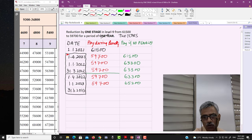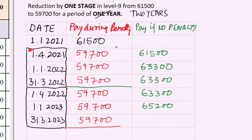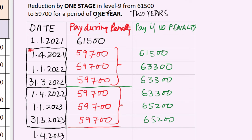On 31st March 2023, he continues to get ₹59,700 under penalty. Without penalty, his salary would be ₹65,200. So if the penalty is for two years but reduction is only for one stage, all through those two years he continues to get ₹59,700. After the two-year period ends on 1st April 2023, since it is without cumulative effect, he gets what he would have got had there been no penalty — that is ₹65,200.